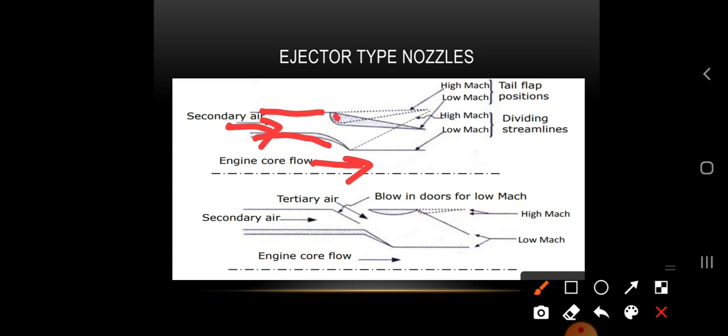Actuating surfaces are present that can be moved in particular directions. This allows us to transition from high Mach number to low Mach number and vice versa with these actuating nozzles.